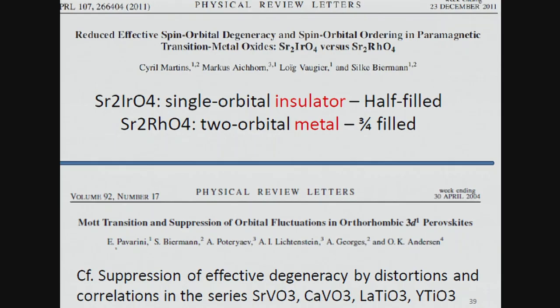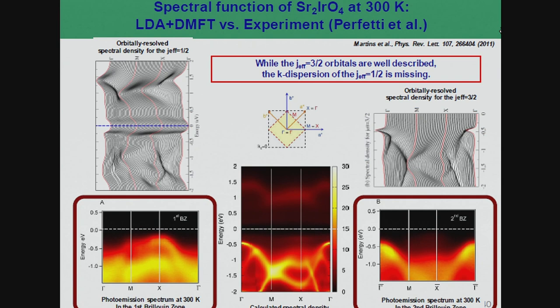You can enjoy the nice Fermi surface comparison to experiment. Why is strontium iridate insulating and strontium rhodate is not? If you have a two-orbital model, you need a much larger Coulomb interaction to localize the electrons because you have more kinetic energy. The suppression of effective degeneracy helps the system go towards the insulating state. This is akin to what we found many years ago with Eva in a series of vanadates and titanates, where for structural reasons one suppresses the degeneracy in the titanates and induces an insulator. You suppress the degeneracy, kinetic energy is lowered, and a lower U is sufficient to induce the insulating state.